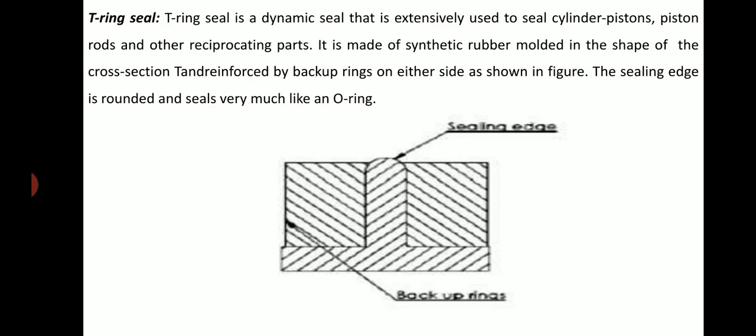T-ring seal: The T-ring seal is a dynamic seal that is extensively used to seal cylinder pistons, piston rods, and other reciprocating parts. It is made of synthetic rubber molded in the shape of a T cross-section and reinforced by backup rings on either side, as shown in the figure. The sealing edge is rounded and seals very much like an O-ring.